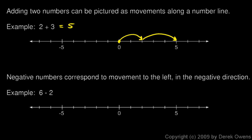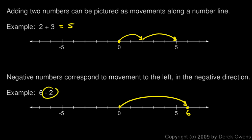Negative numbers correspond to movement to the left, which is the negative direction. All the positive numbers on the number line are on the right side, and all the negative numbers are on the left. So it's common to think of right as the positive direction and left as the negative direction. In this example, six minus two: the six means starting from zero we go six to the right, and that puts us at six. Then the minus two means we go two to the left, and that puts us back at four. So six minus two equals four.